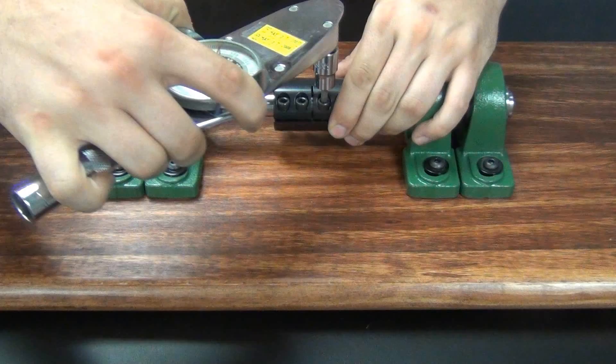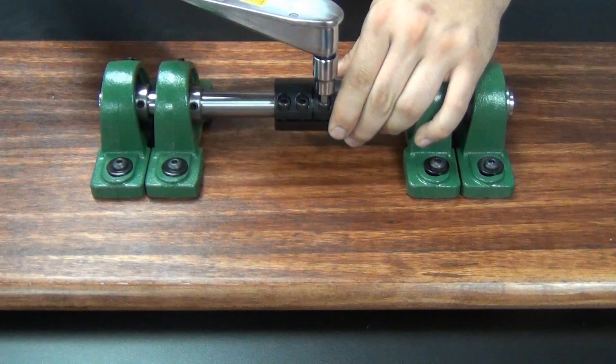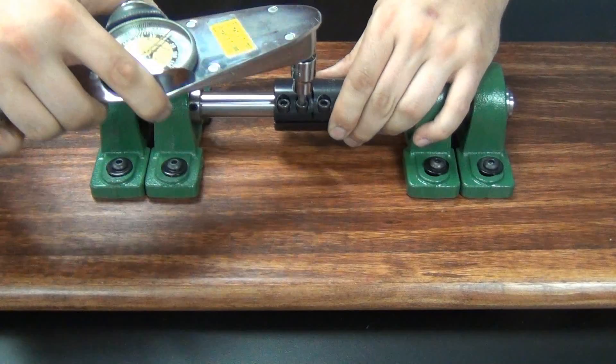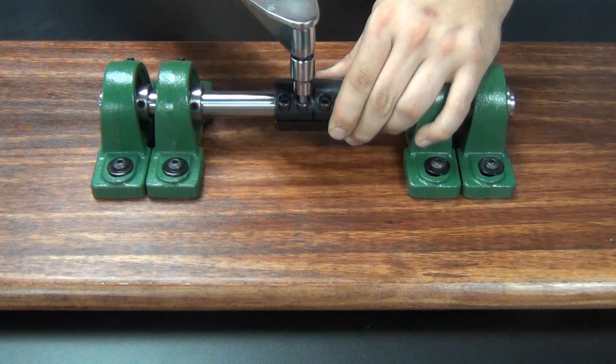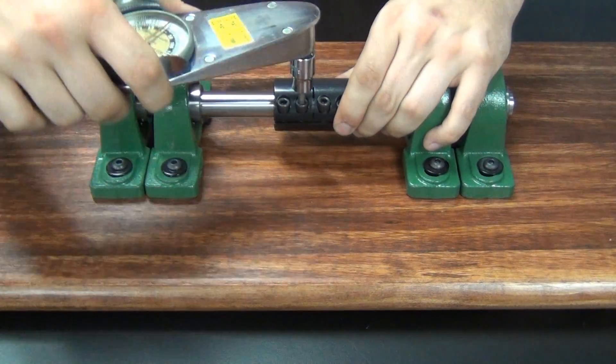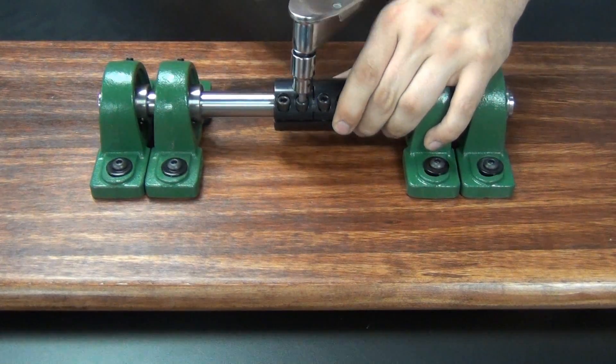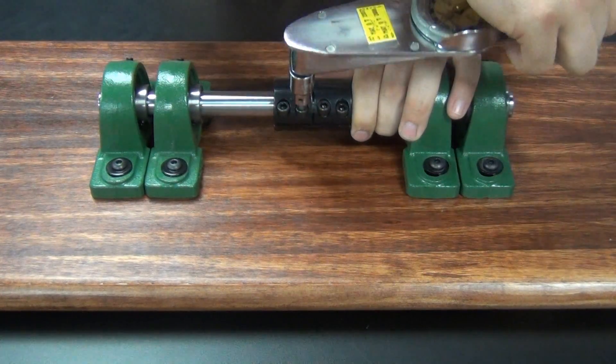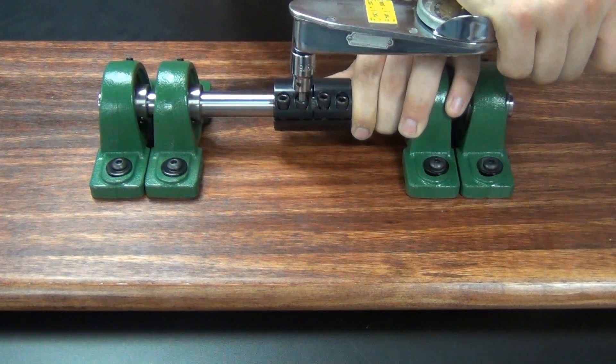We recommend tightening the clamp screws in two stages. Starting with the inside screws, tighten to half of the recommended seating torque. The recommended seating torque on this coupling is 76 inch pounds, so I will tighten to 38 inch pounds.